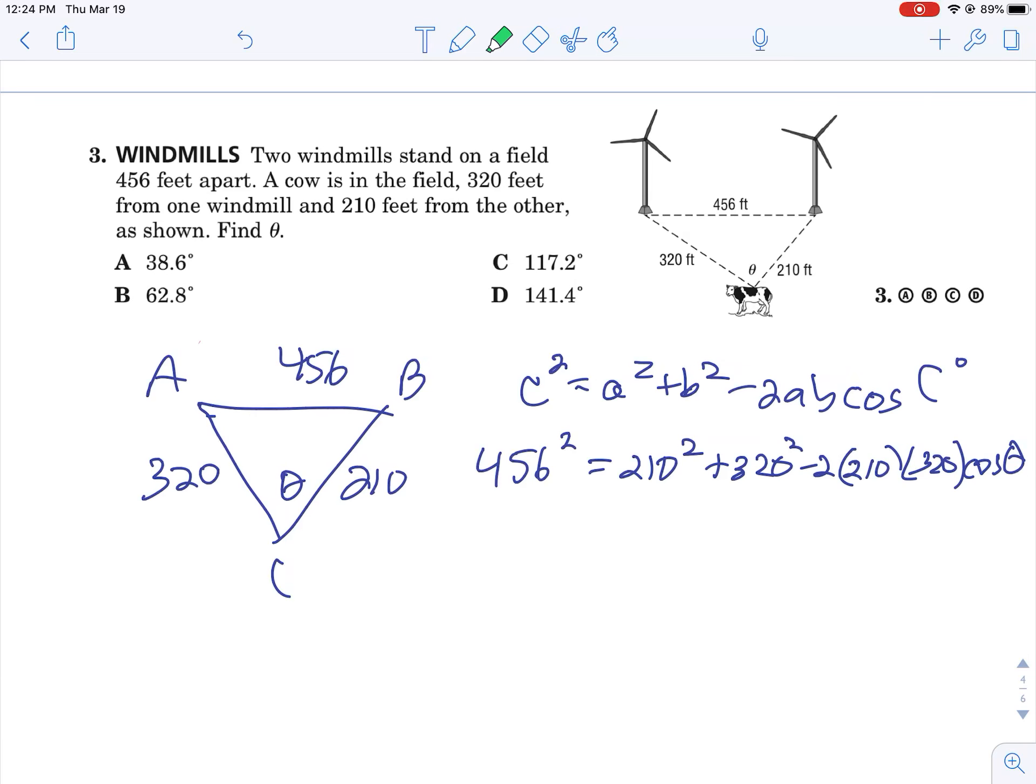That's the setup, and this is the most difficult of our law of cosines. Excuse me, my laryngitis is still being weird. So you're going to leave this stuff alone. We're going to get the actual squares of those. We're going to get 207,936 equals 44,100 plus 102,400 minus 134,400 cosine of theta.